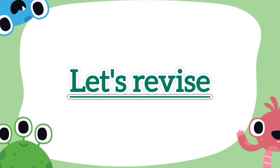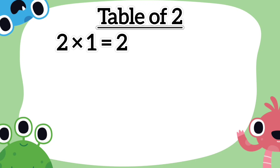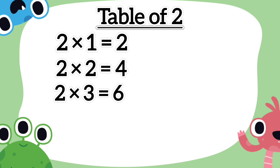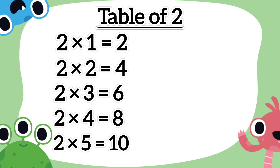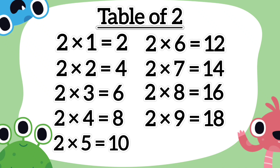Now, let's revise together. Two ones are two. Two twos are four. Two threes are six. Two fours are eight. Two fives are ten. Two sixes are twelve. Two sevens are fourteen. Two eights are sixteen. Two nines are eighteen. Two tens are twenty.